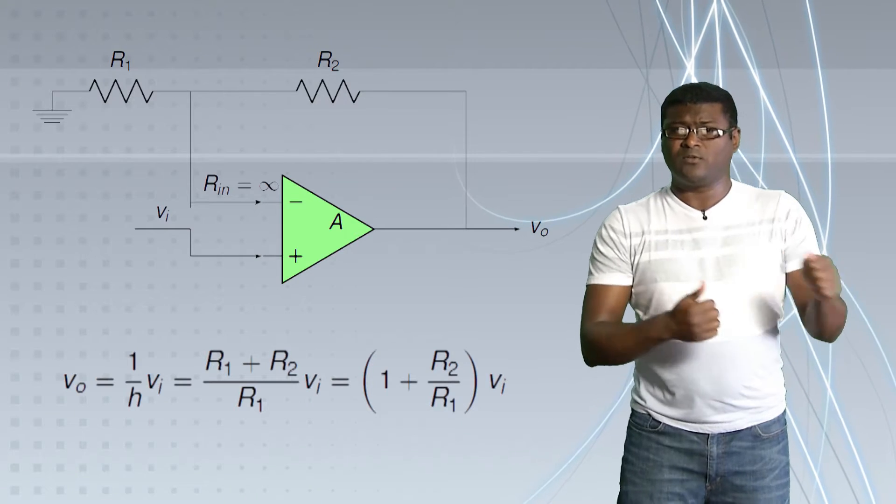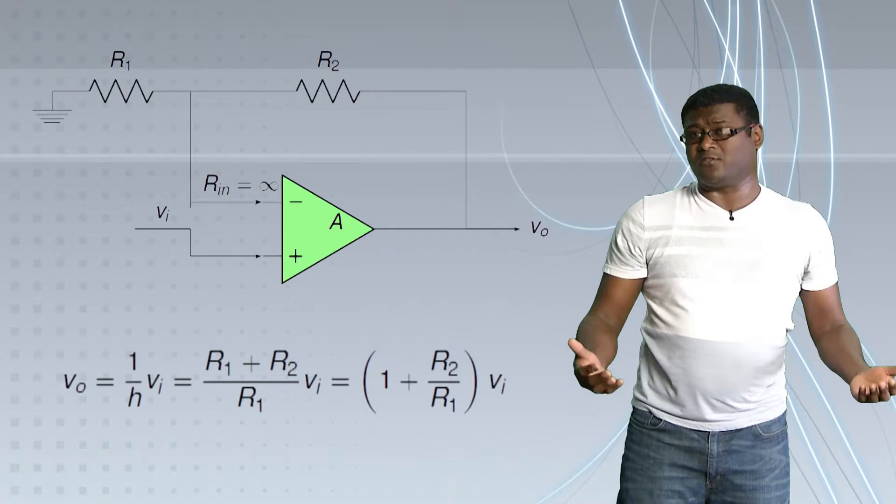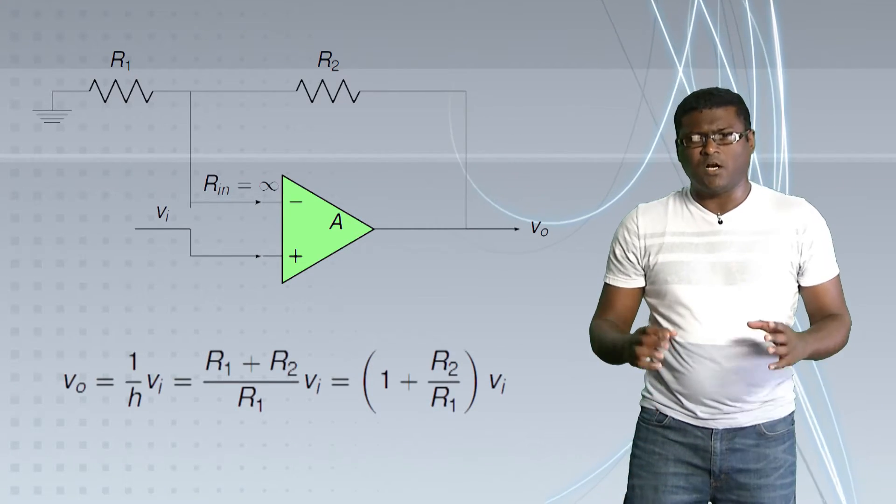So, the current going into both the pins is zero. Therefore, we actually have a voltage divider and the formula still applies. Let's look at another important property of an operational amplifier.